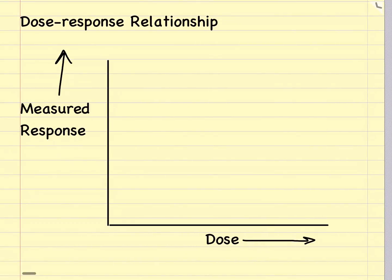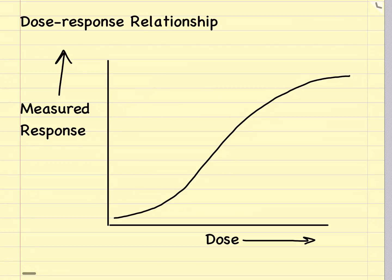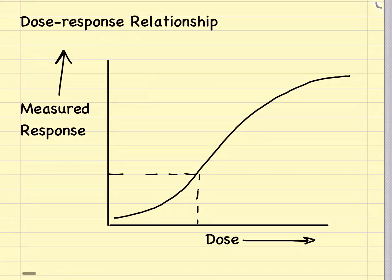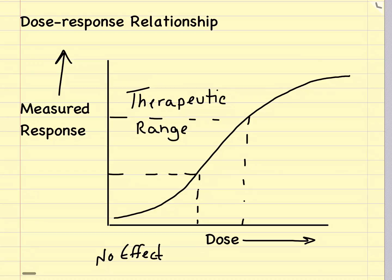A drug can affect a cell by either stimulating it, depressing it, irritating it, or even causing the cell to die. It's important to remember that no drug produces only a single effect. We can look at the dose-response relationship by plotting a simple XY graph of increasing dose on the x-axis versus the measured response on the y-axis. As the drug dose increases, there is an increase in patient response until a maximum response or plateau is achieved, above which we start to see adverse effects and potentially patient death.